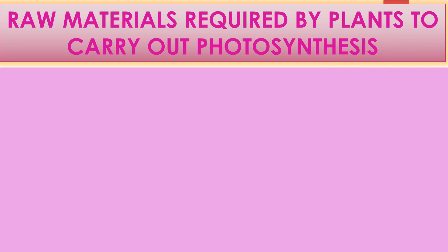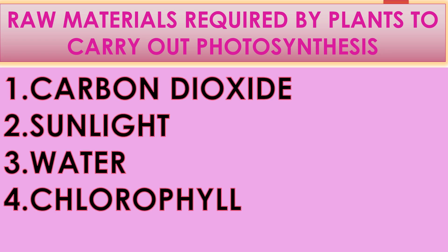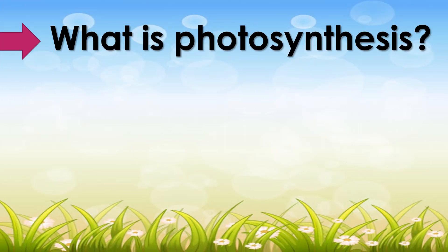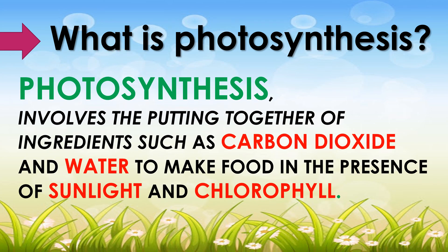The raw materials required by plants to carry out photosynthesis are carbon dioxide, sunlight, water, and chlorophyll. This is how the process of photosynthesis takes place. Photosynthesis involves the putting together of ingredients such as carbon dioxide and water to make food in the presence of sunlight and chlorophyll.